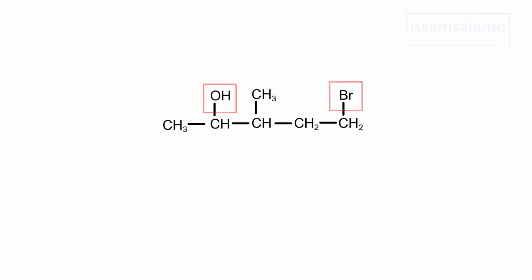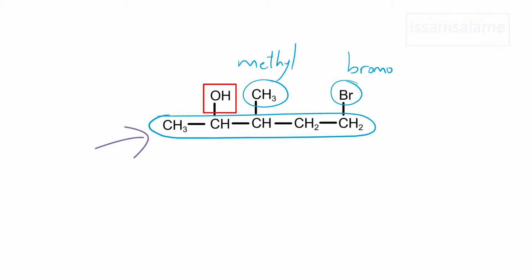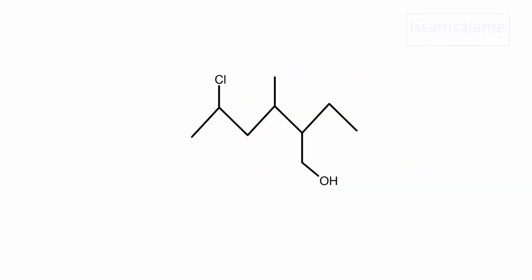Now let's practice naming compounds where we have a hydroxyl group and halogen substituents. Here is the longest chain. Hydroxyl groups always have priority over halogen substituents in the longest chain and in numbering carbon atoms. The branches here are methyl and bromo. We start numbering from the end closer to the hydroxyl group, then name the branches alphabetically. The name is 5-bromo-3-methyl-2-pentanol.